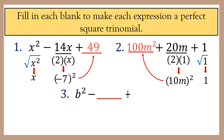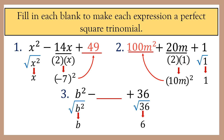Number 3: b squared minus blank plus 36. The missing term is the middle term. We simply get the square root of the first term and the last term. The square root of b squared is b, and the square root of 36 is 6. The middle term should be twice the product of the quantities that were squared, which are b and 6: 2 times b times 6 is 12b. Therefore, the perfect square trinomial is b squared minus 12b plus 36.